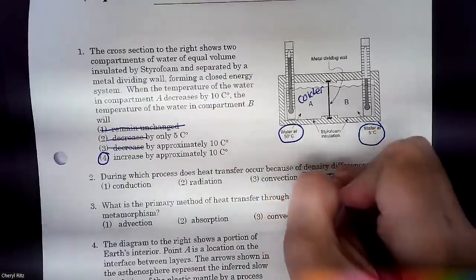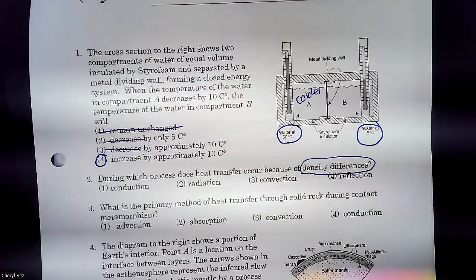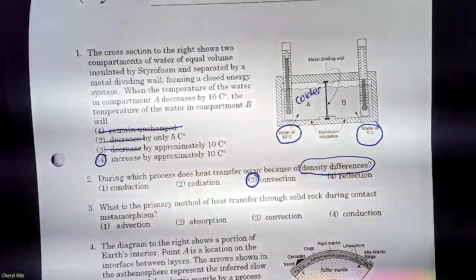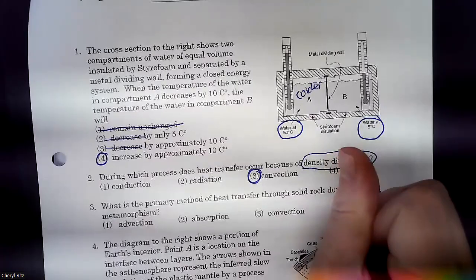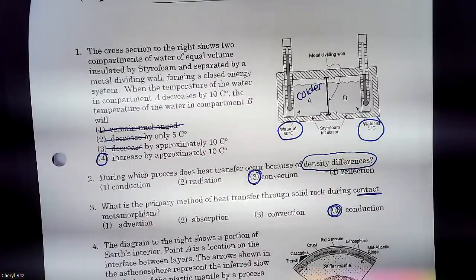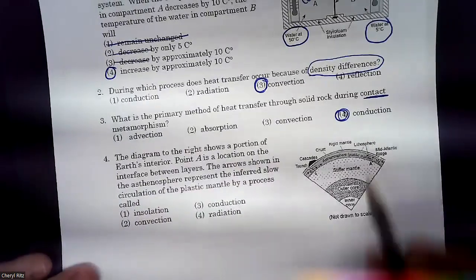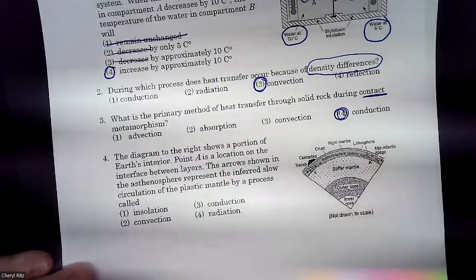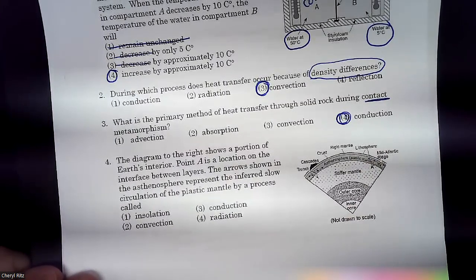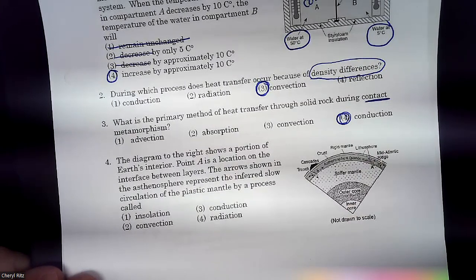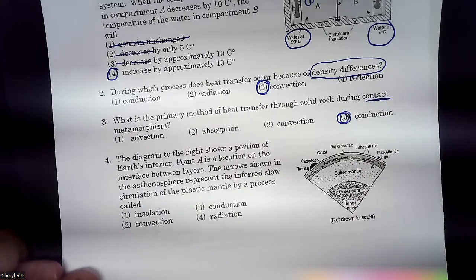Which one is a heat transfer due to differences in density? Convection. Warm, less dense materials rise. Cold, more dense materials sink. And what's the primary method of heat transfer through solid rock during contact metamorphism? When you touch things, you have conduction. And finally, on this page, the arrows in the asthenosphere, that's this little layer right here. The arrows shown in the asthenosphere represent the inferred slow circulation of the plastic mantle by a process of those arrows that are in a circular pattern. They are in the mantle. Convection.